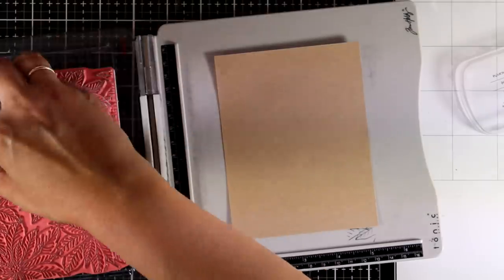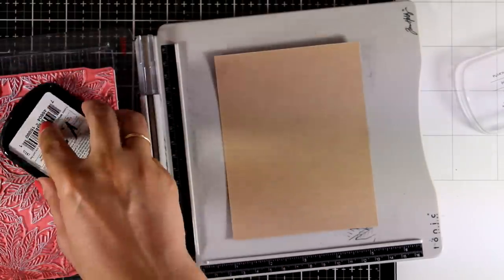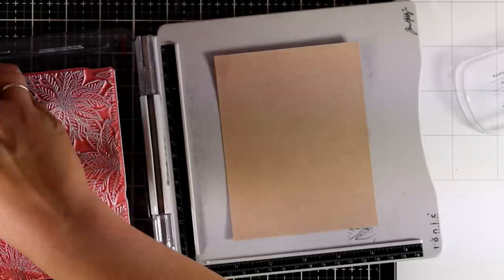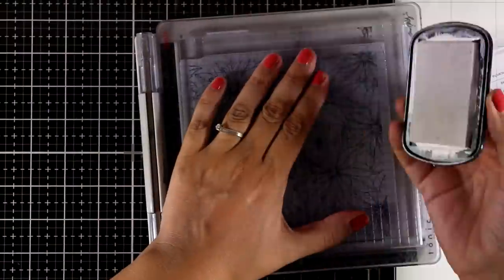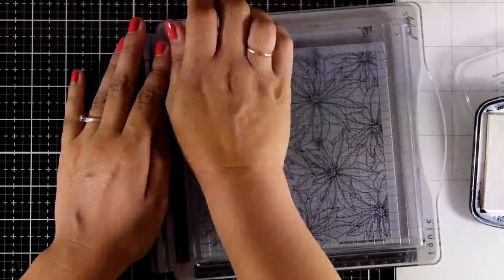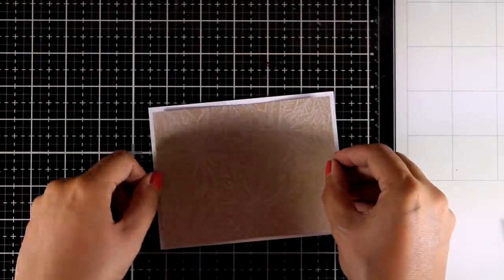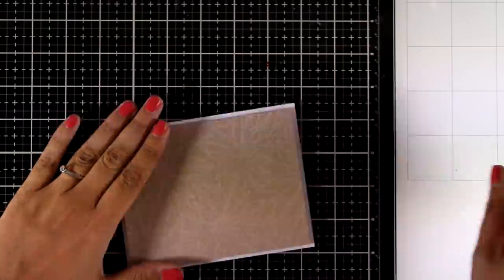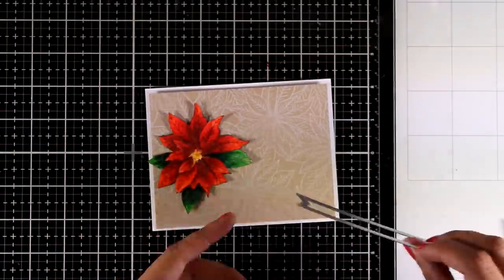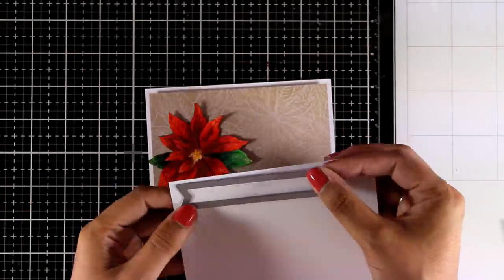For my background again I will be using the same background stamp. This time I'm working with white ink and I'm going to stamp that a couple of times on craft cardstock. I'm going to stick this panel on top of my card base, pop the embellishment on top and then I'm going to add a little sentiment. For that I'm using this ribbon die, I'm going to cut out a little strip of paper and stamp the sentiment on top.